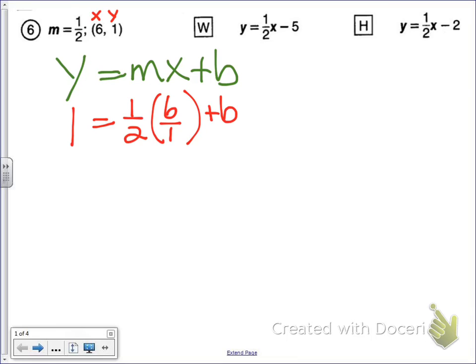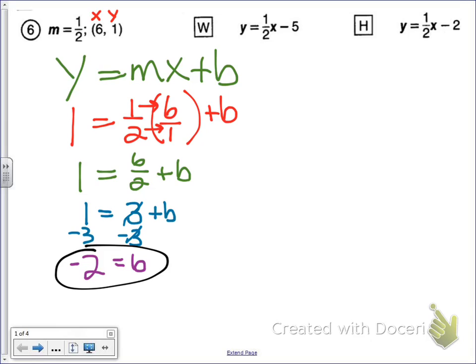I'm going to put a one under six. When you multiply fractions, you can cross-reduce or multiply straight across. One equals six over two plus b. Six over two reduces to one equals three plus b. To get b by itself, we subtract three from both sides. One minus three gives me negative two equals b.